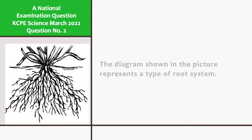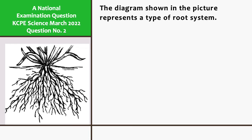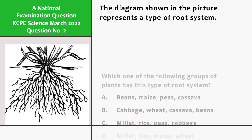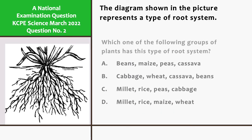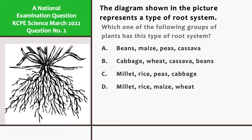The diagram shown in the picture represents a type of root system. Which one of the following groups of plants has this type of root system? A. Beans, maize, peas, and cassava.